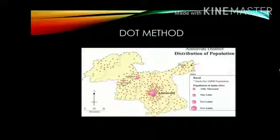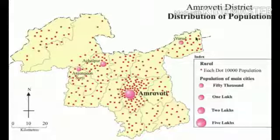A dot map is prepared using statistical data. While preparing a dot map, only data gathered by counting is used. This way, a variable is distributed throughout the region and dots are used to show its distribution on the map. For example, a population map or a cattle population map.